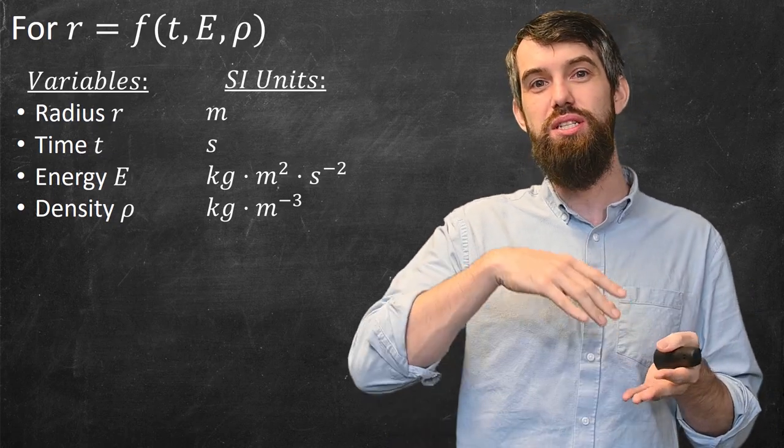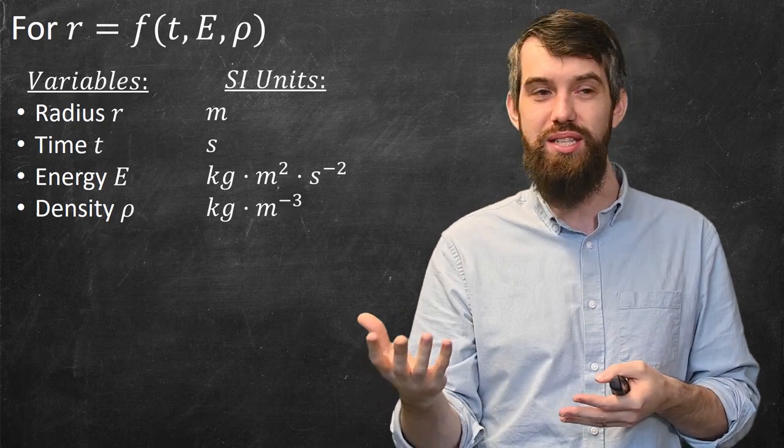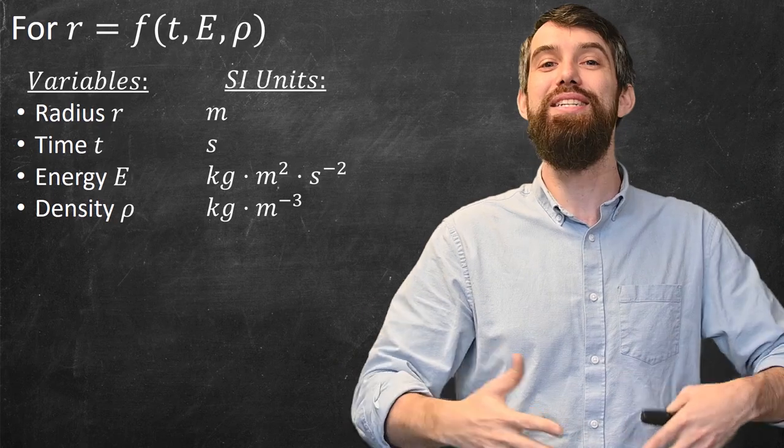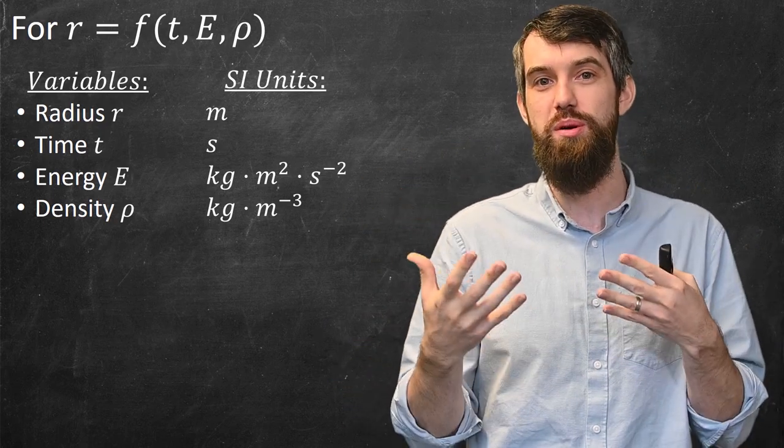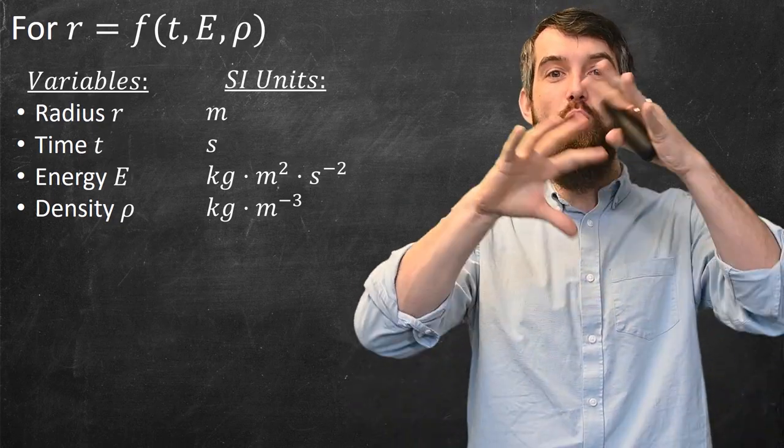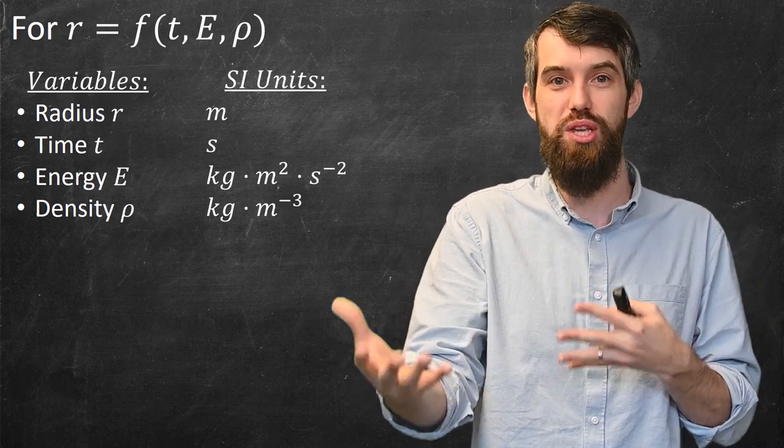For energy, which is like force times distance, force is mass times acceleration, so kilograms meters per second squared, that times another meters, this is going to give you the energy, so kilograms meters squared per second squared. This is the units for energy. And then units for density, we're asking how much stuff per unit volume, so kilograms per meters cubed.